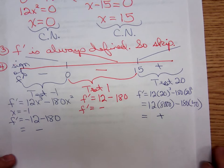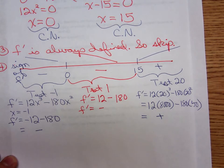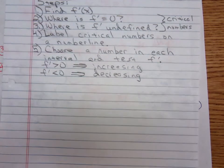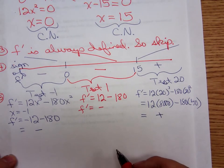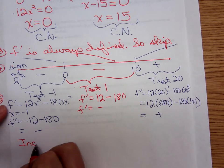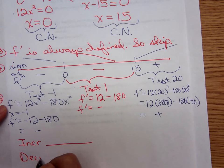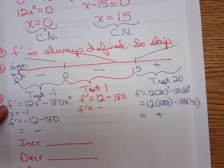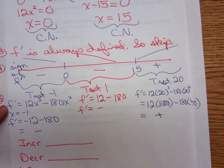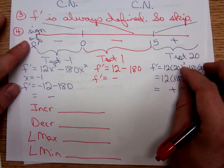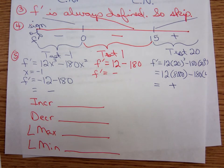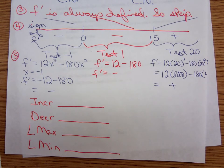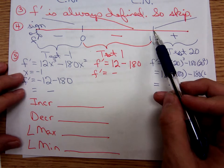That was the testing part — step 5. Now let's summarize. When is the function increasing? It increases from 15 to infinity. When is it decreasing? From negative infinity to 0, and from 0 to 15.